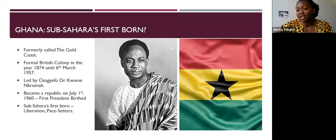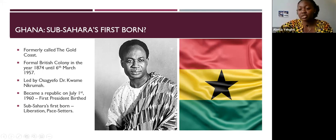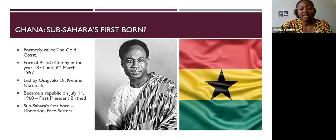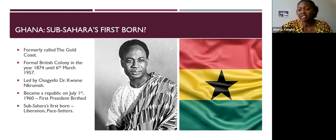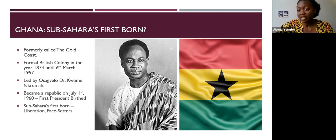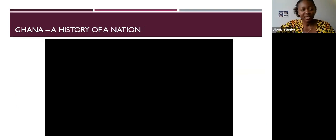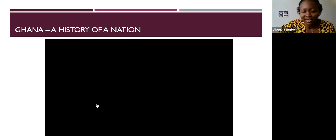Our flag's colors are red, gold, green, and the black star. The red symbolizes the blood shed in the struggle for independence; gold signifies the rich mineral resources; green signifies our rich forestry; and the black star is the lodestar of African freedom. Ghana is sub-Sahara's first born because we were the first country in sub-Saharan Africa to gain independence from our colonial masters, and we set the pace for the rest of Africa.